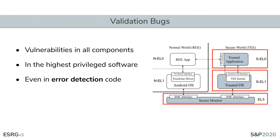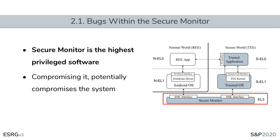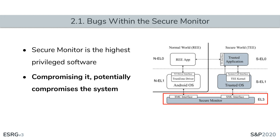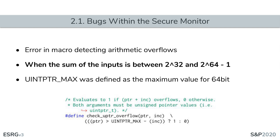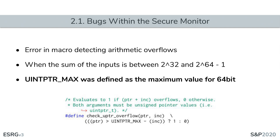Even error-checking code might be buggy. An example validation bug was found in the ARM Trusted Firmware, ARM's reference implementation for secure monitor software, which is often configured by vendors and incorporated as part of their TE solution. The bug was present in a macro whose purpose is detecting overflows when doing pointer arithmetic. This macro failed to detect overflows of 32-bit pointers when built for 32-bit platforms, because the `UINTPTR_MAX` define was set to the maximum 64-bit pointer value instead of the maximum 32-bit pointer value.